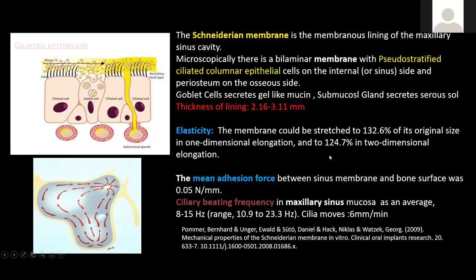A sinus lining perforation can result in grafts escaping into the sinus, chronic sinusitis, and implants getting displaced into the sinus. When we de-roof the sinus from the bone, it is around 0.05 Newtons per millimeter of adhesion force present between the bone, the periosteum, and the sinus lining.